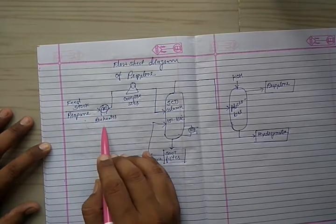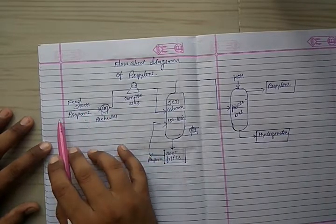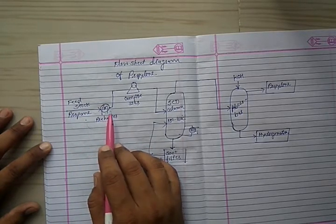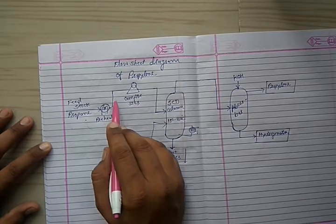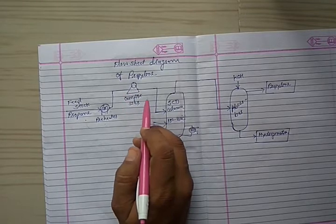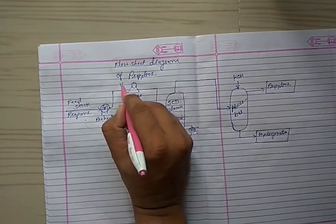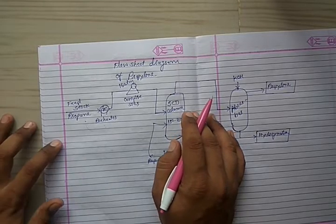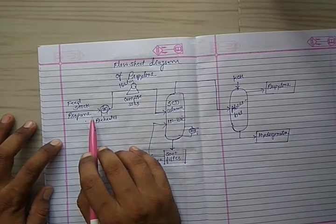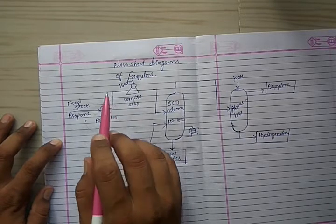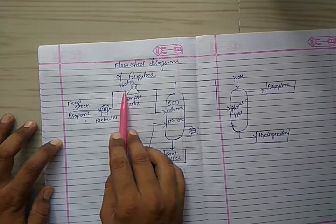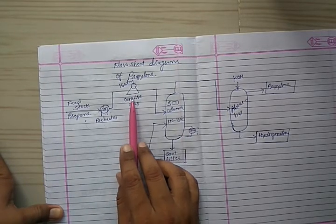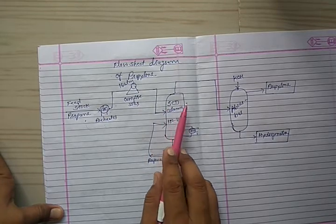The propane gas is first heated in the pre-heater and then compressed in the compressor at 16 atmospheric pressure. The heated propane gas is compressed in the compressor at 16 atmospheric pressure and then charged into the SCD column.